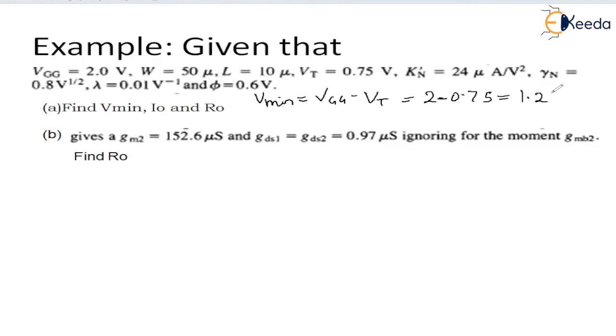Similarly, I0 can be found by the saturation current equation: KN' by 2, W by L, times (VGG minus VT) squared. Putting all the values and solving it, we get 97 microamperes.